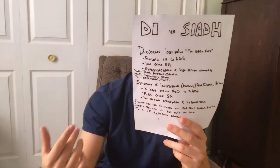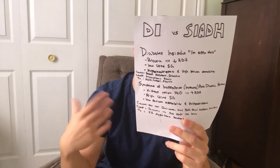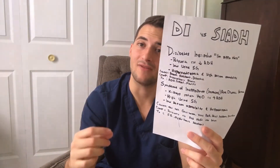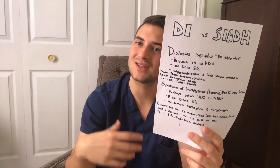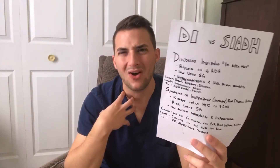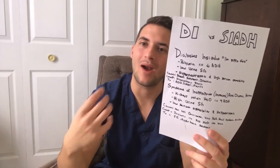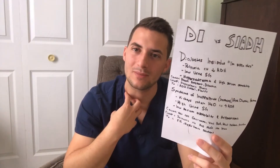They have decreased anti-diuretic hormone, so they have polyuria because of this decreased anti-diuretic hormone. They have a low urine specific gravity because it's kind of just water. Inside of our bodies, we're pushing all this water out but we're retaining the salt — we're not really grabbing the salt with the water and taking it out.